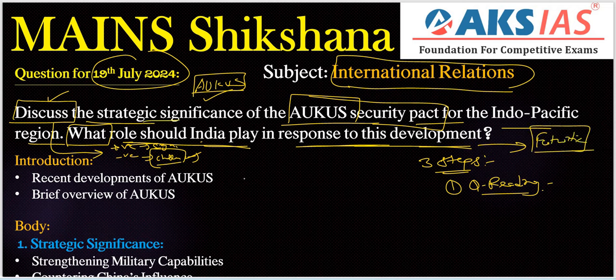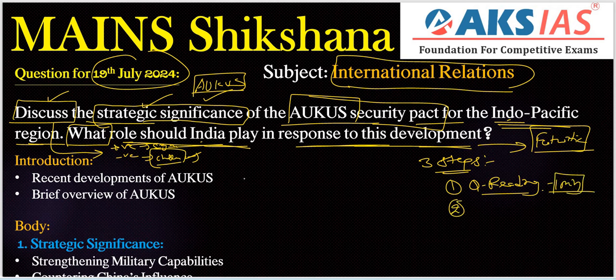Important keywords here: 'strategic significance' is one key thing — what are the aims, objectives, or components of AUKUS. 'Indo-Pacific region' is also an important keyword — we need to add at least one line regarding its significance. And 'India's role' is the main keyword for the second part. This question reading should be completed in one minute.